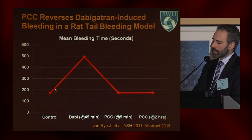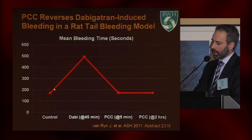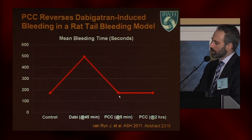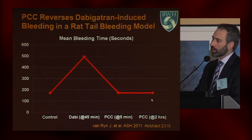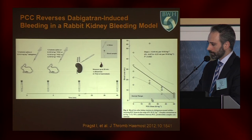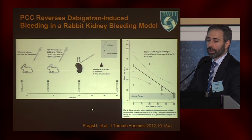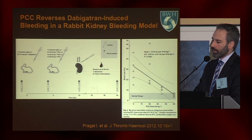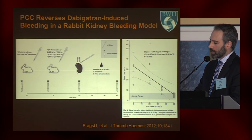Here's a study that looked at rat tail bleeding for dabigatran-induced bleeding. You can see dabigatran is given, bleeding time increases, prothrombin complex concentrate is administered, and the mean bleeding time returns to baseline. Likewise, in the rabbit kidney bleeding model, the same thing — if you give PCC, you can actually reverse this in the setting of dabigatran.